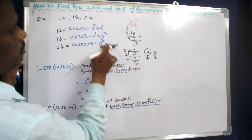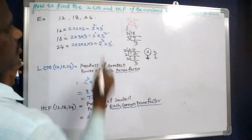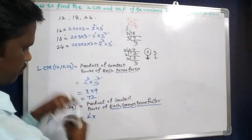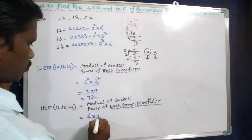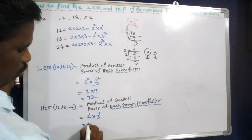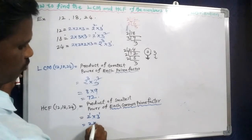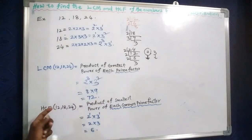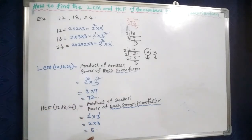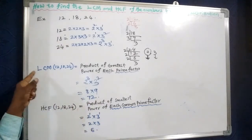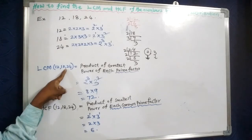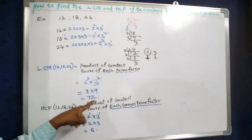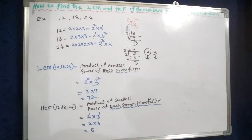The smallest power of 3 is 3 to the power of 1. So HCF is 2 into 3, which is 6. Therefore, HCF of 12, 18, and 24 is 6, and LCM of 12, 18, and 24 is 72.